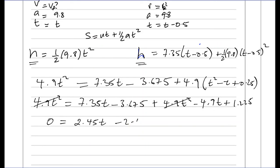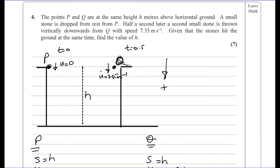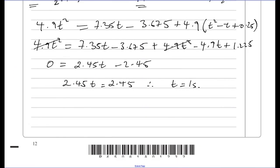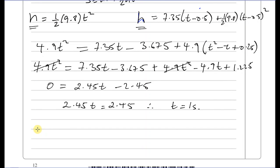So 2.45T equals 2.45, meaning T equals 1 second. But the question asks for H, so substituting T equals 1 into the simpler equation: H equals one half times 9.8 times 1 squared, which gives H equals 4.9 meters.